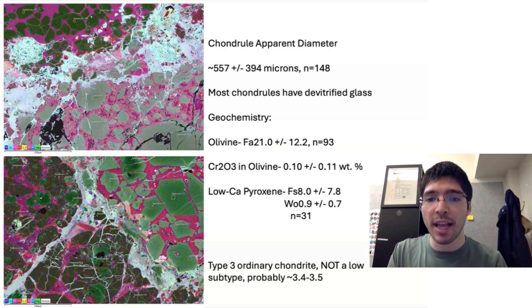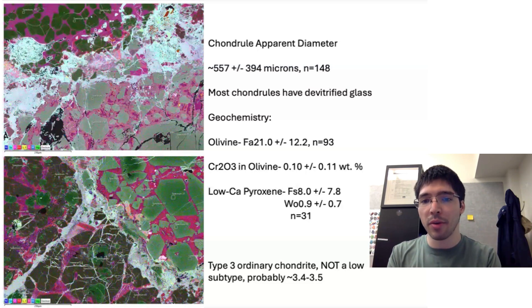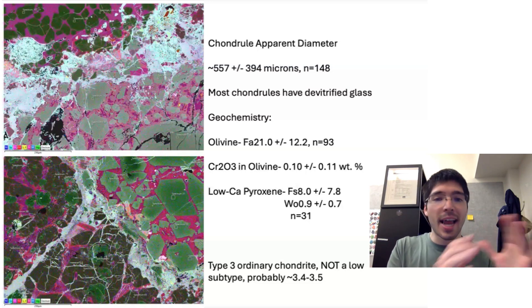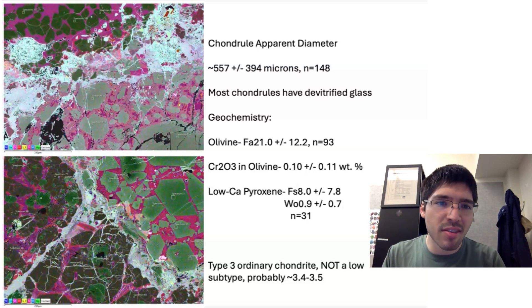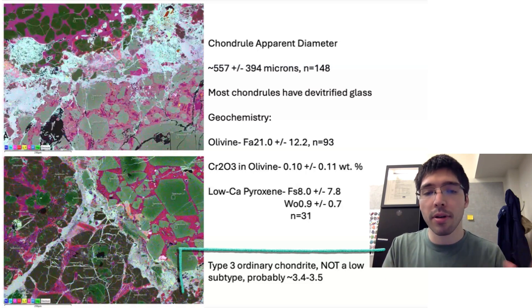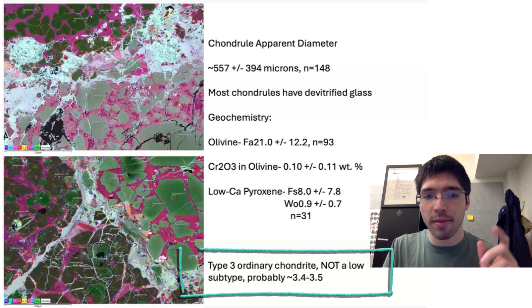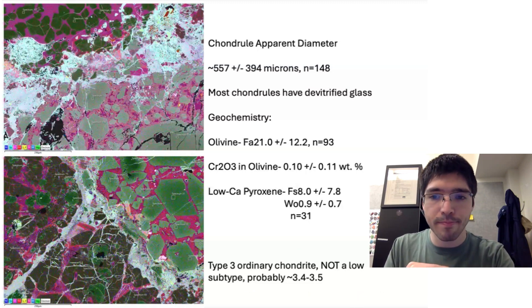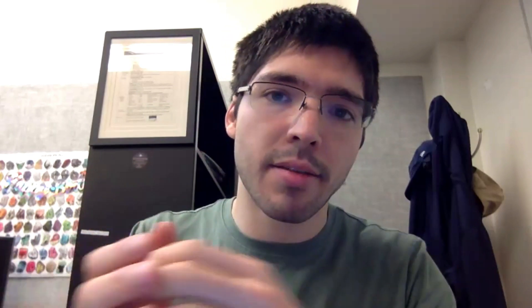Having said that, this is not a high type 3 subtype either, because once you hit 3.6 and 3.7, your olivine composition, so this fayalite value, begins to equilibrate or reach one net value. The fact that I have this large spread in composition tells me that while I'm not at a 3.15, I'm not at a 3.8 either. I'm somewhere in the middle. The fact that I still in a few chondrules preserve primary glass tells me I'm probably a 3.4 to 3.5. So this was how I was able to notice that this was this subtype right away.